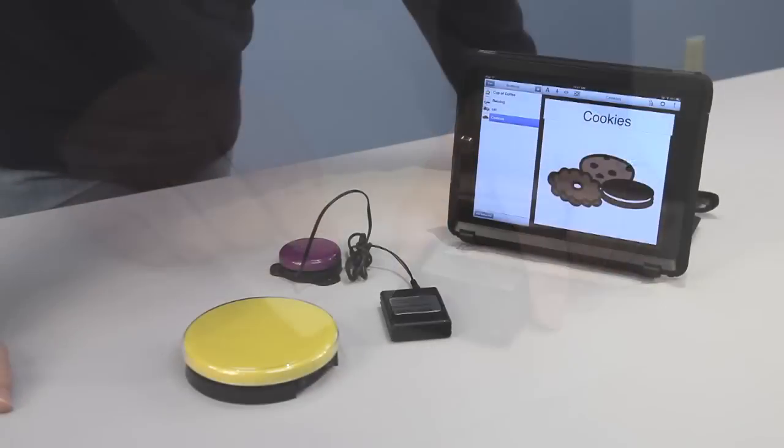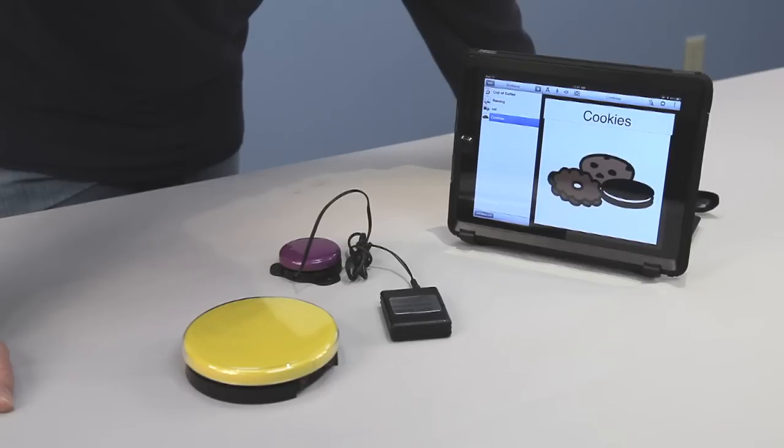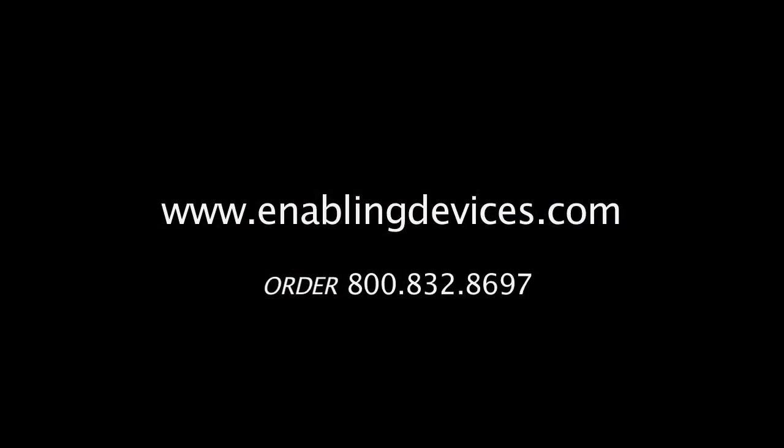So there you have it. You have the iPad super switch interface number 4101 and our iPad cordless super switch number 1052. These items can be purchased on our website at enablingdevices.com or through our phone sales at 1-800-832-8697 and our mail order catalog. Thanks for stopping by. I hope you enjoyed the video today.